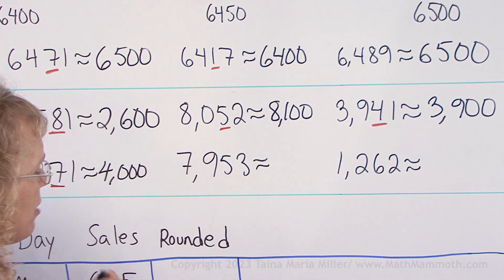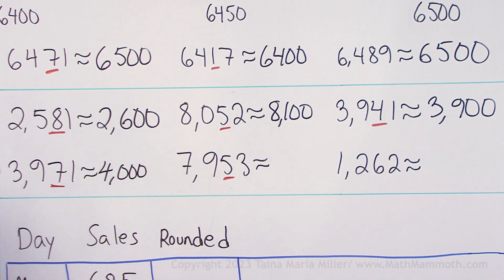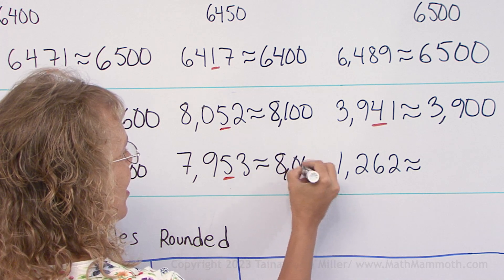How about 7953? Five. Round up. And again, we go to the next whole thousand actually, which is 8000.